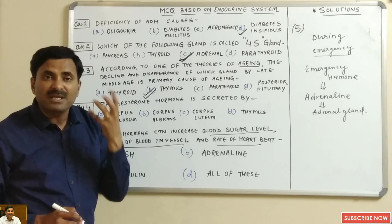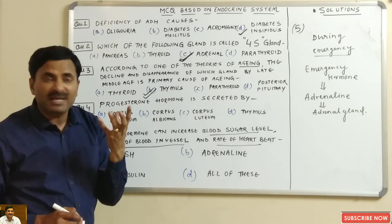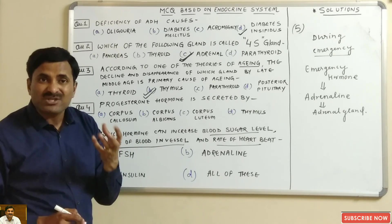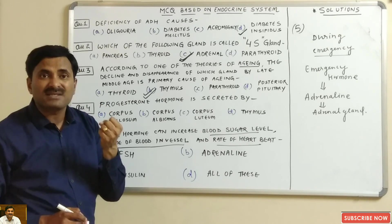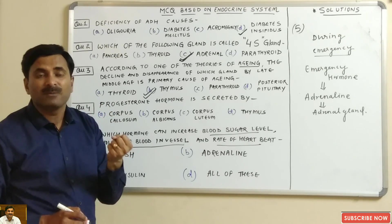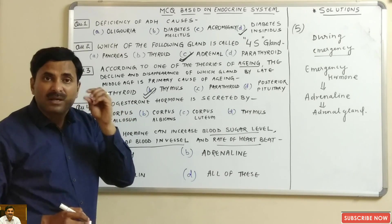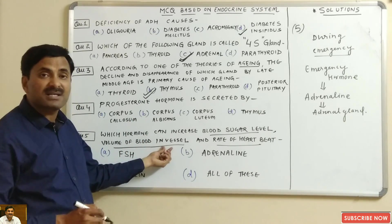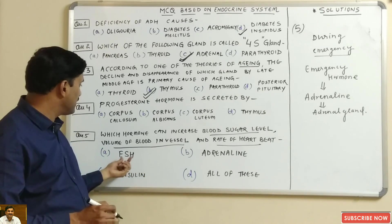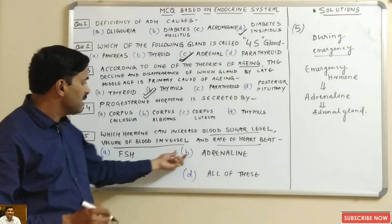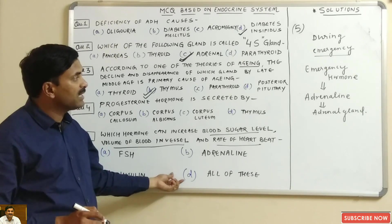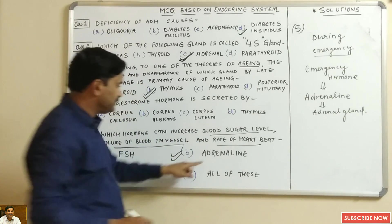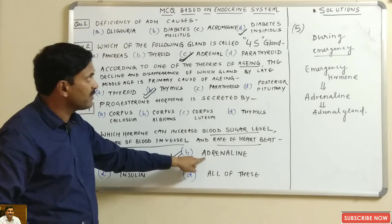The effects of adrenaline include: sugar level increases, volume of blood in blood vessels increases, heart rate increases, goose flesh occurs (hairs on the body become erect), and the pupil dilates. These are symptoms that occur during emergency. Since adrenaline is the emergency hormone causing all these symptoms, it is the correct answer.